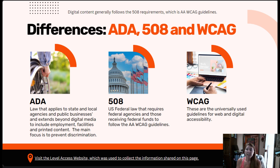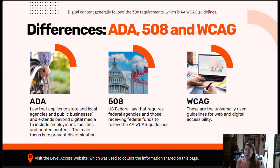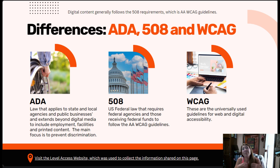Section 508 is a section of the Rehabilitation Act of 1973. It's a law that requires federal agencies and any vendor or business that receives federal funding to make all of their digital information accessible to everyone — so the internet should be accessible to everyone, including those with vision, hearing, mobility, and cognitive impairments. If you have to be Section 508 compliant, then you're also by default ADA compliant, because you're making it available to more people and you're not discriminating.